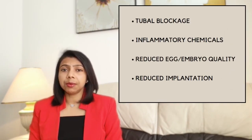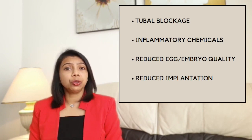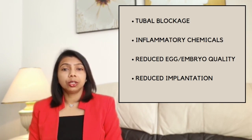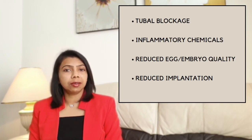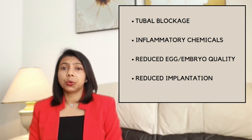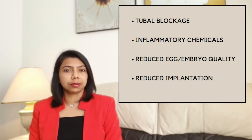These chemicals are found to lower the quality of the eggs, reduce sperm motility, and affect the quality of the embryos and implantation. Hence, the chances of getting pregnant — even if you have mild endometriosis and normal tubes — can sometimes be lower.